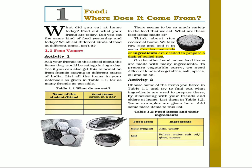Choose some of the items you listed in table 1.1 and try to find out what ingredients are used to prepare these, by discussing with your friends and elders at home. List them in table 1.2 — some examples are given. Add some more items to the list.